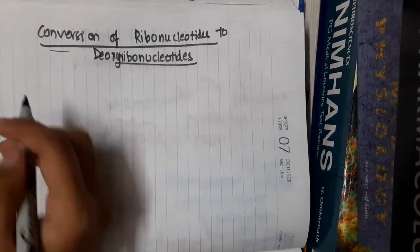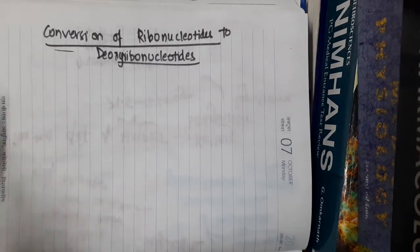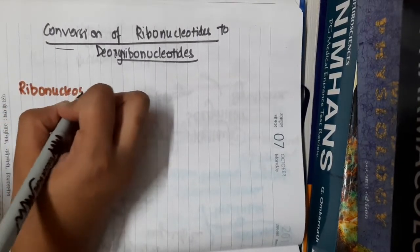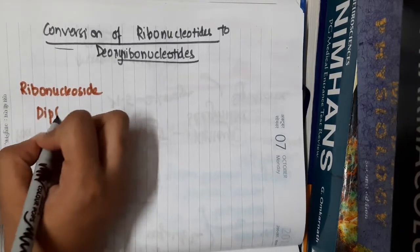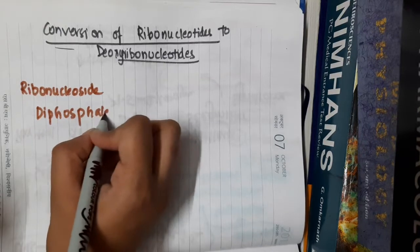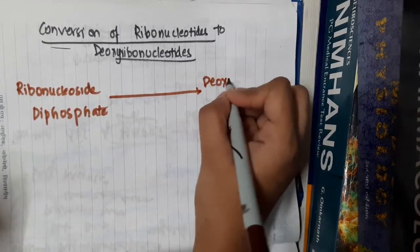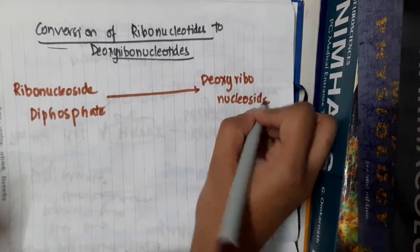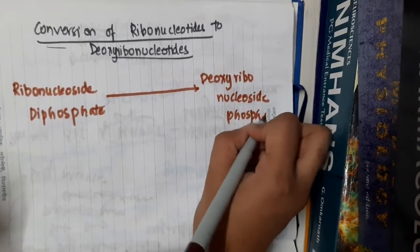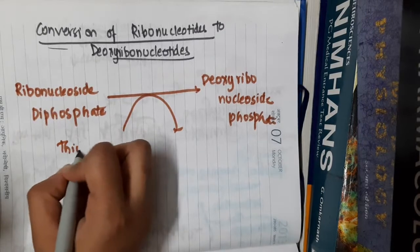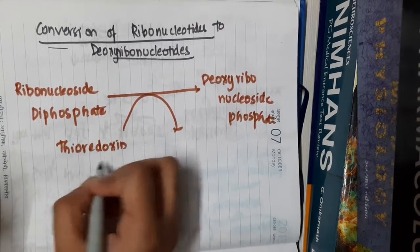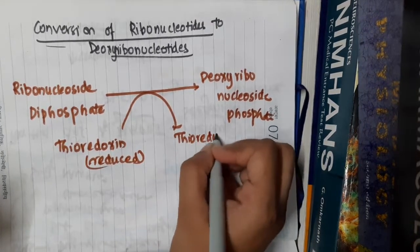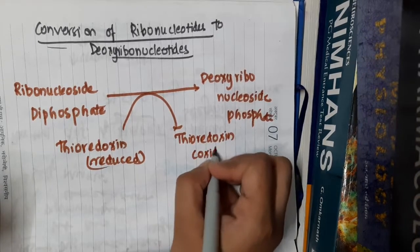Let us now learn some important points about the conversion of ribonucleotide to deoxyribonucleotide. Ribonucleoside diphosphate, in the presence of ribonucleotide reductase, gets converted to deoxyribonucleoside diphosphate. During this process, thioredoxin, which is in reduced form, gets converted to oxidized thioredoxin.